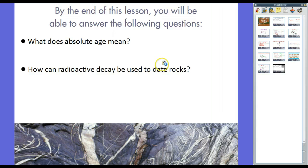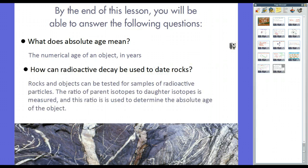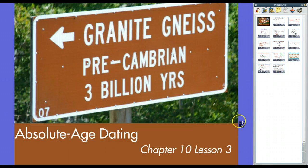It's pretty old. And whenever we talk about geologic time, we'll see that humans' time on Earth is really, really short in comparison. So let's wrap this up. By the end of this lesson, you will be able to answer these questions. We know that absolute age means the numerical age of an object in years. Now, how can radioactive decay be used to date rocks? Well, rocks and objects can be tested for samples of radioactive particles. The ratio of parent isotopes and daughter isotopes is measured. And that ratio is used to determine the absolute age of the object. So, there you go. Absolute age dating. If you have any questions, feel free to let me know on YouTube, anything like that, anything in class. Feel free to send me an email or anything like that. Thanks for listening.